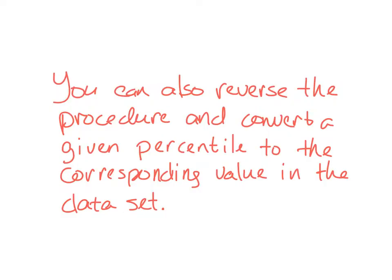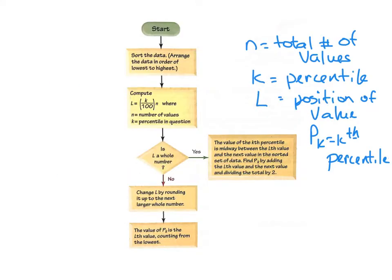You can also reverse the procedure. If they give you a percentile, you can find the data set that works. First, some things stand for: N is the total number of values, K is a percentile, and L is the position of the value, like what number of value is it in the data set. Is it the 10th value? Is it the 25th value?